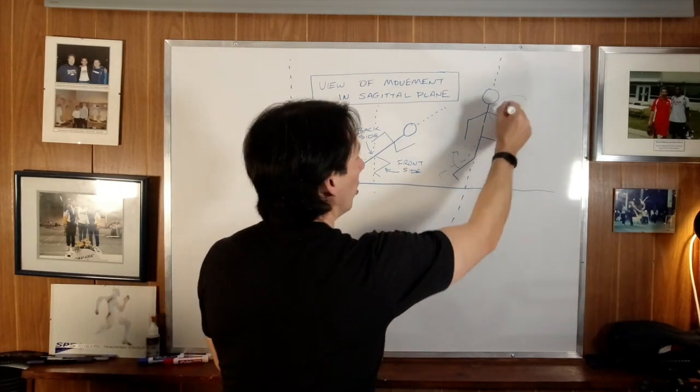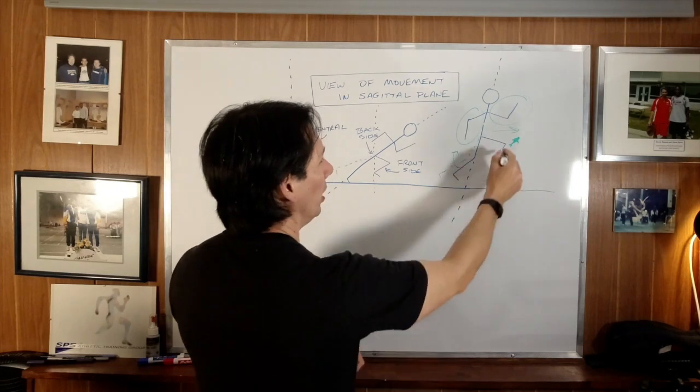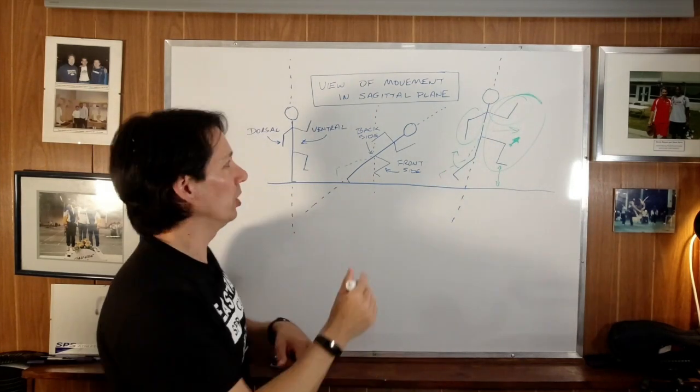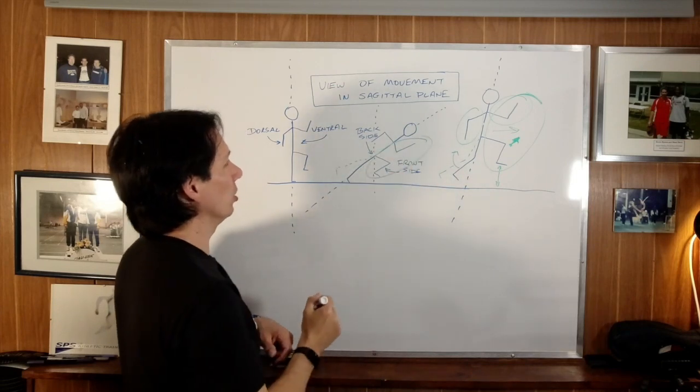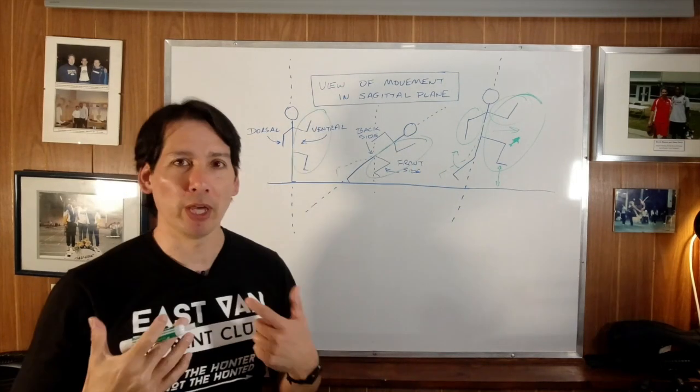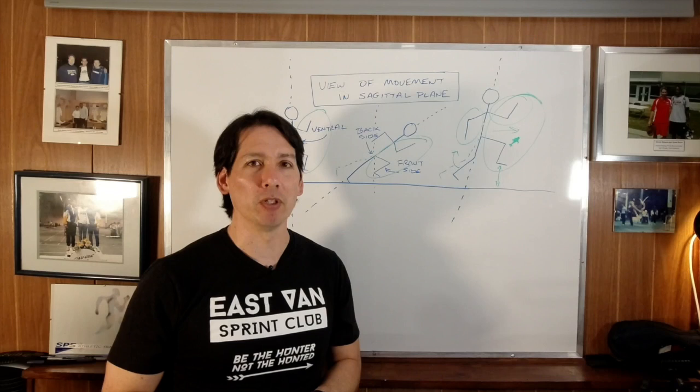When I say frontside of the arms, this is the backside of the arms, right? We're going to have a more frontside dominant action in sprinting, and I would even say in an acceleration, and of course, in upright drills. So that's my interpretation of frontside versus backside.